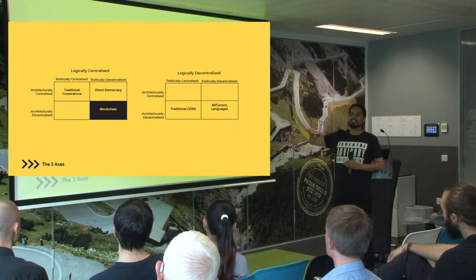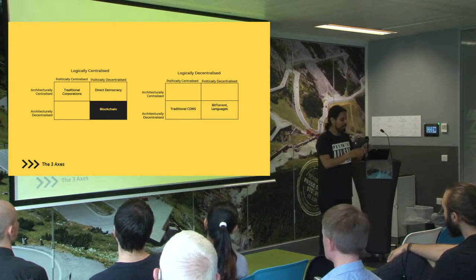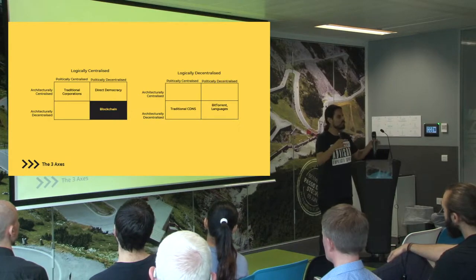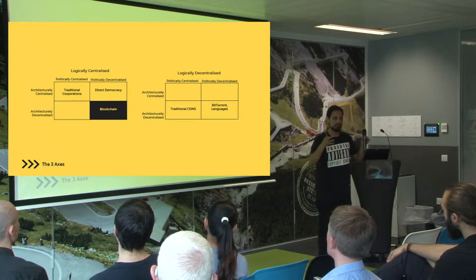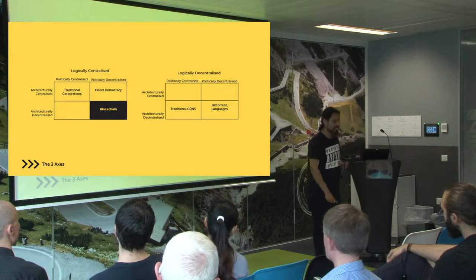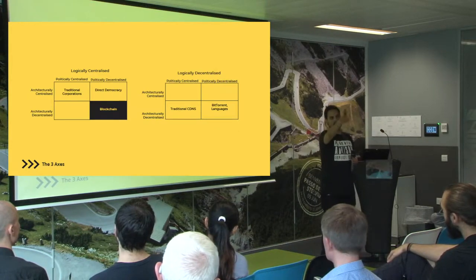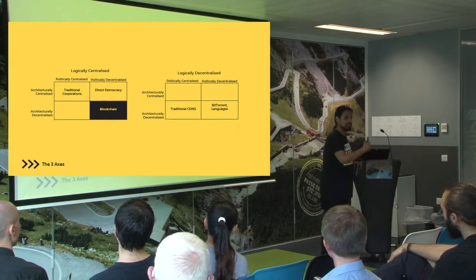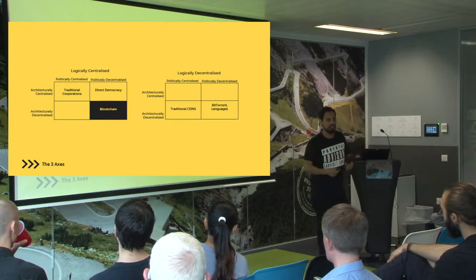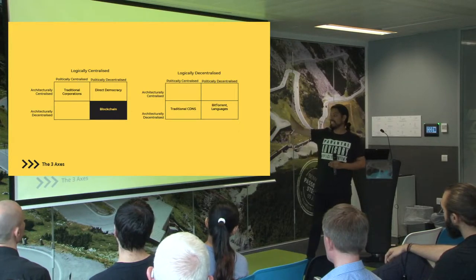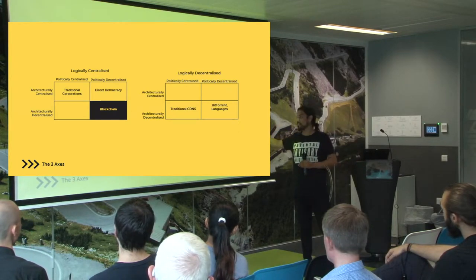Logical decentralization is essentially: if you have something and you divide it in two, will the two still exist and still function as they are? Example: languages. Say I'm speaking in English to Kyle, and that guy is speaking to her in Bengali. If we stop talking, it doesn't affect the fact that they're going to stop talking as well. Hence BitTorrent and languages are logically decentralized and architecturally decentralized.